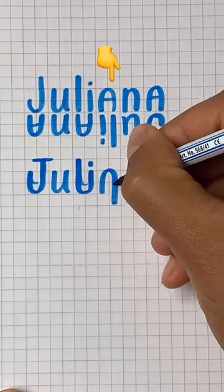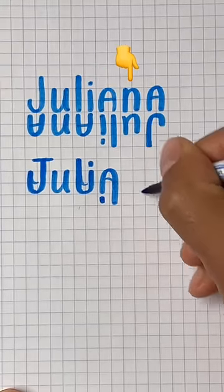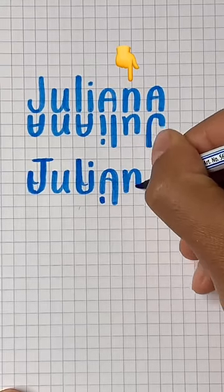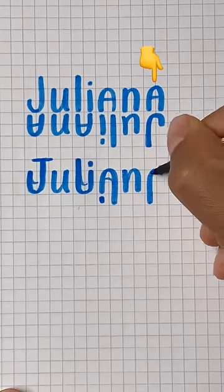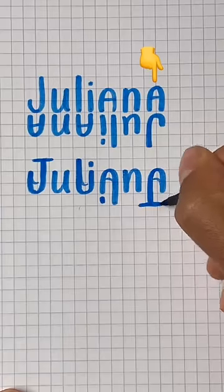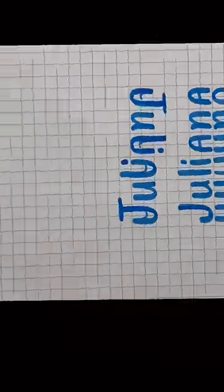Now we just reverse the process with the A turning into the L and I, the N turning into the U, and the A at the end becoming the J. It really helps the readability that the A's look similar to each other. And there you have it, a Juliana Ambigram.